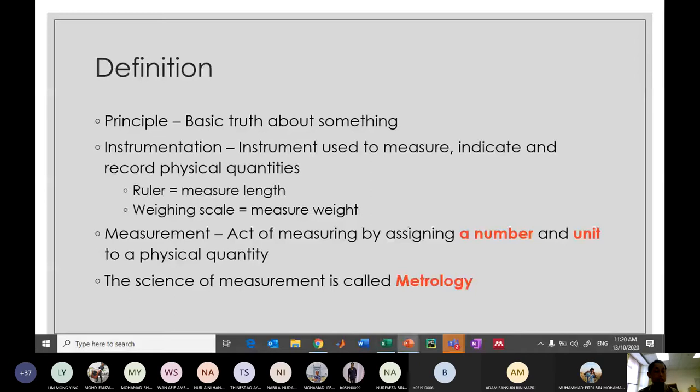The first word is principle. Principle is a basic truth about something. The second keyword is instrumentation, the equipment that we use to measure, indicate, and record physical quantities. Simple examples are rulers and weighing scales when we want to measure length and weight. The third keyword is measurement. Measurement is the act of measuring by assigning a number and a unit. I highlighted this one, number and unit, because it's very critical. I see that even your seniors, fourth year students, sometimes when they write answers they write the answer without giving the unit. In engineering, writing a number without a unit is a major sin, dosa besar, because without a unit we do not know the context of your measurement. The science of measurement we call metrology.